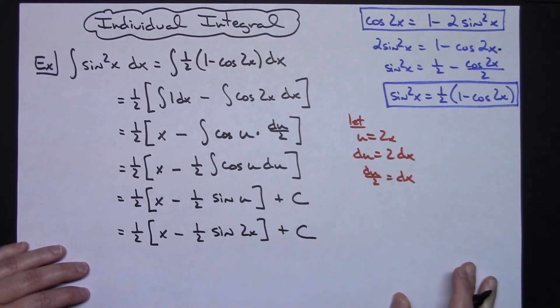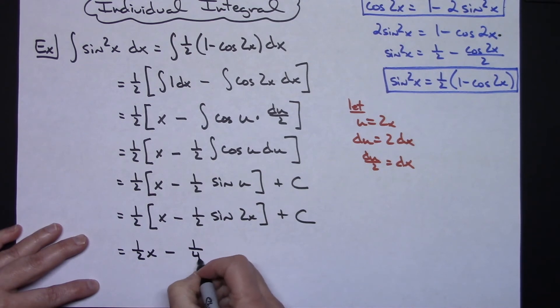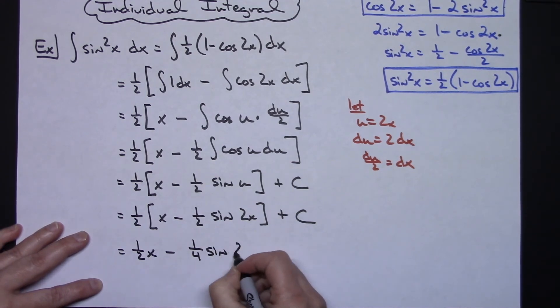And then the last thing then would be just to go ahead and distribute that 1 half right there. So I'll have a 1 half x minus a 1 fourth sine 2x plus c.